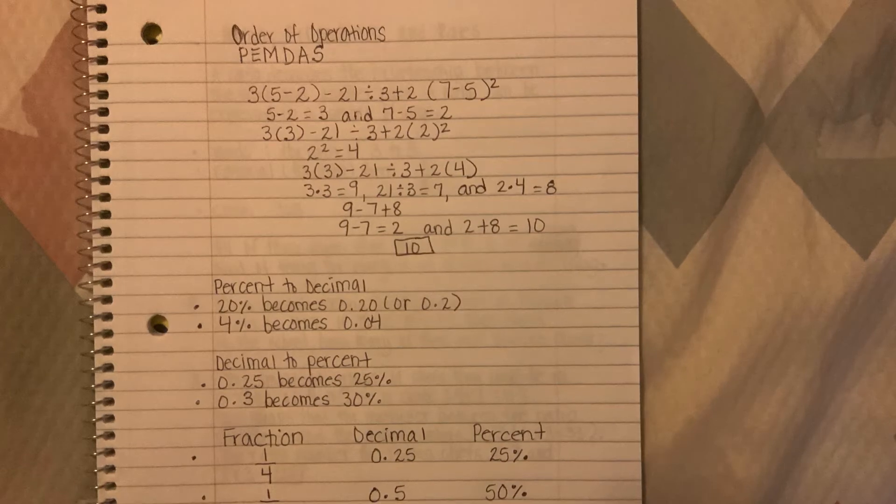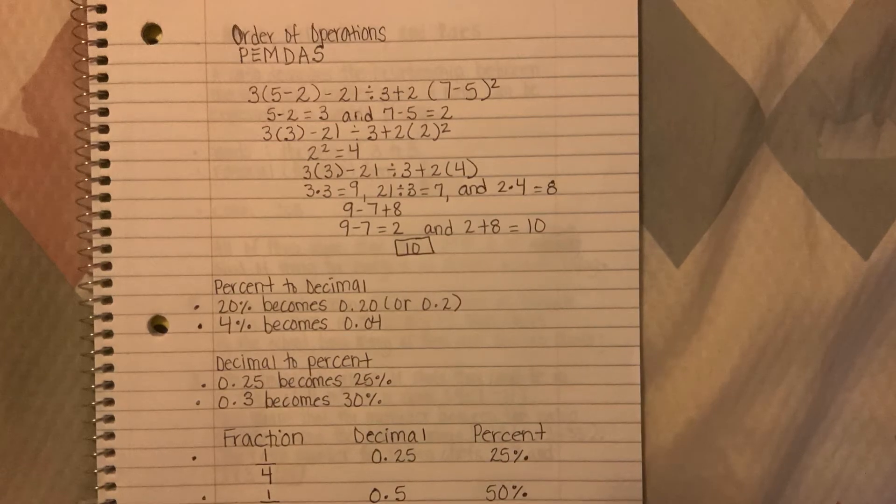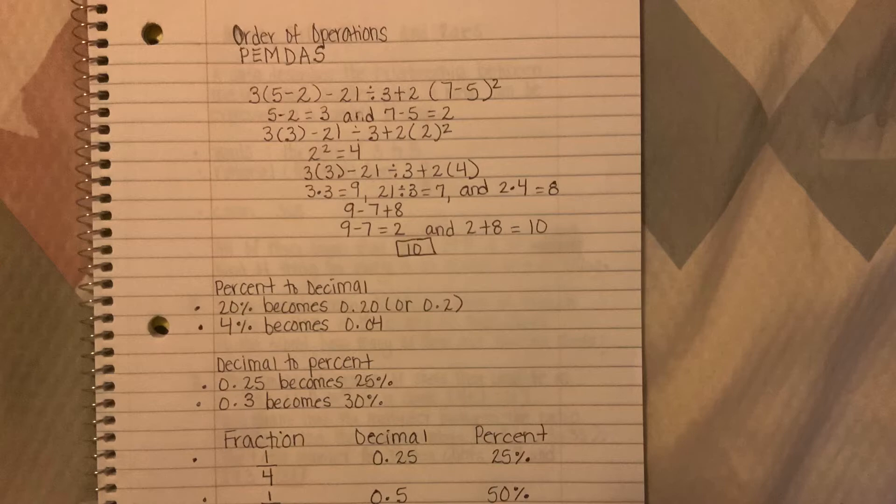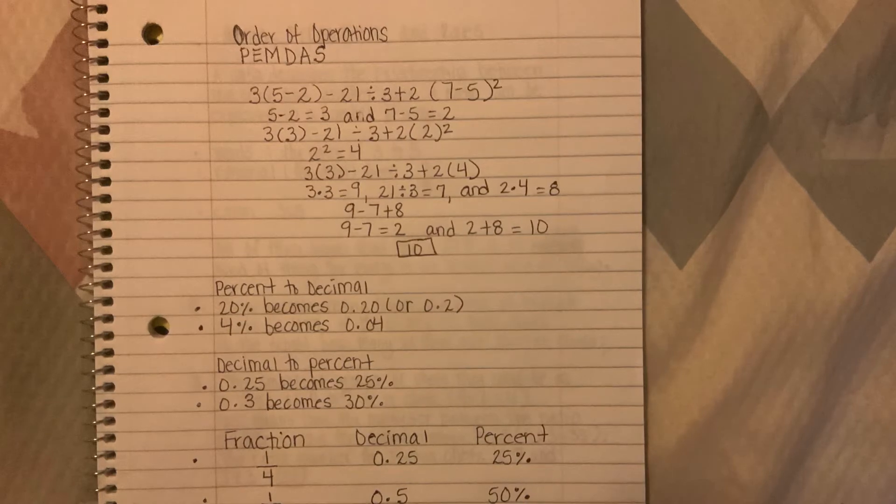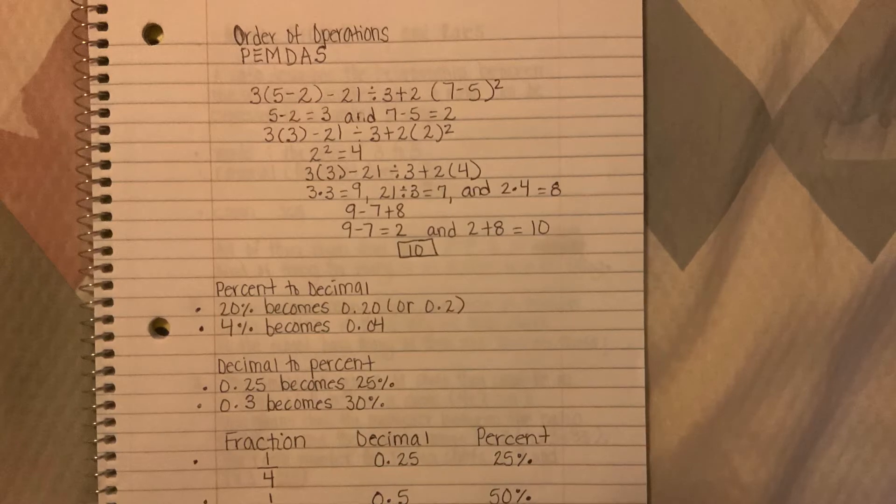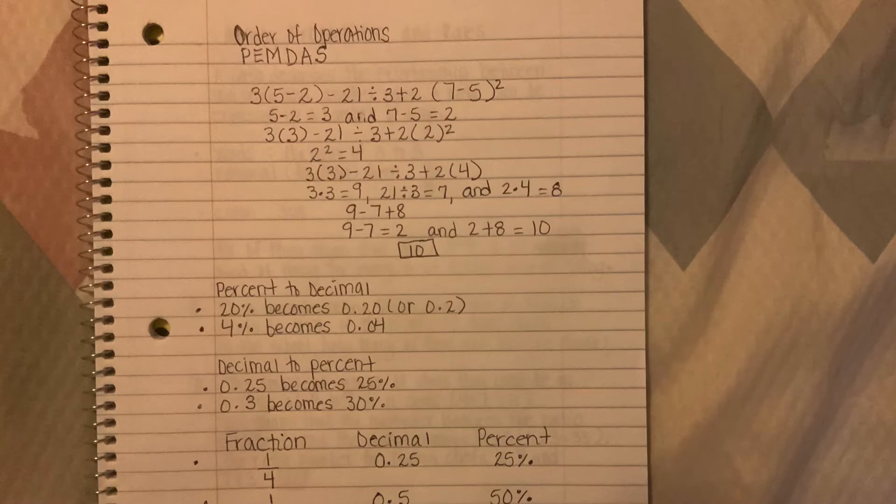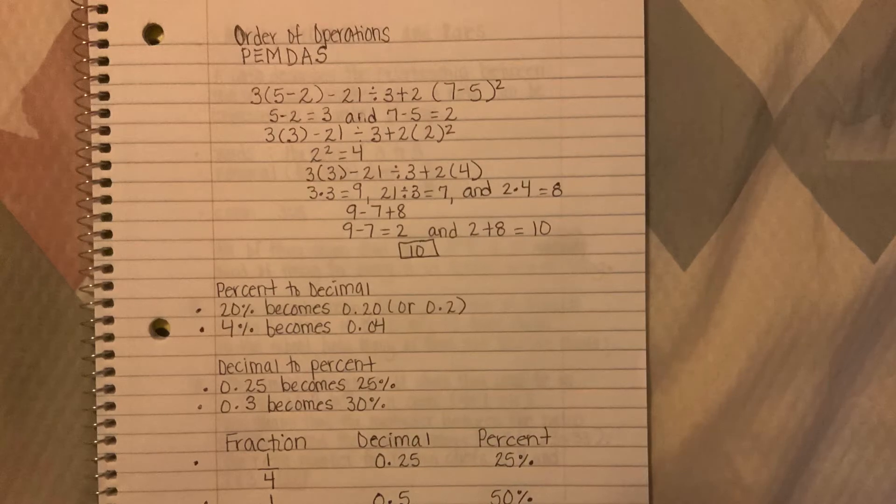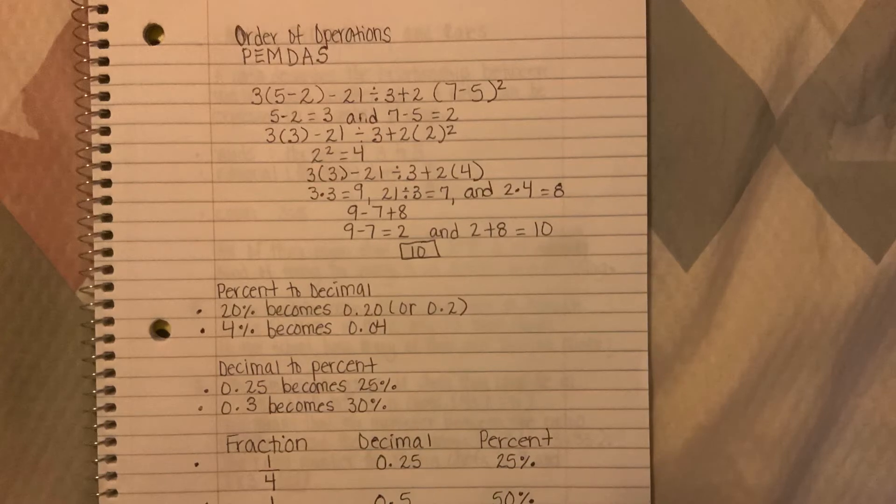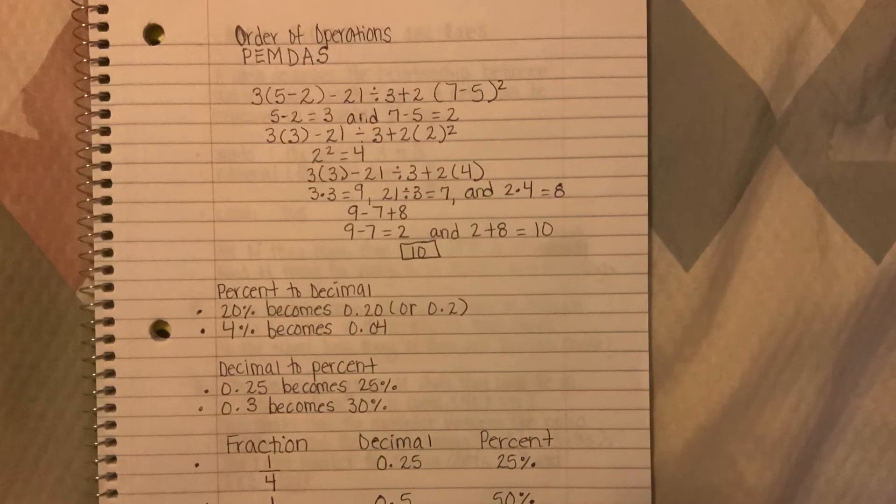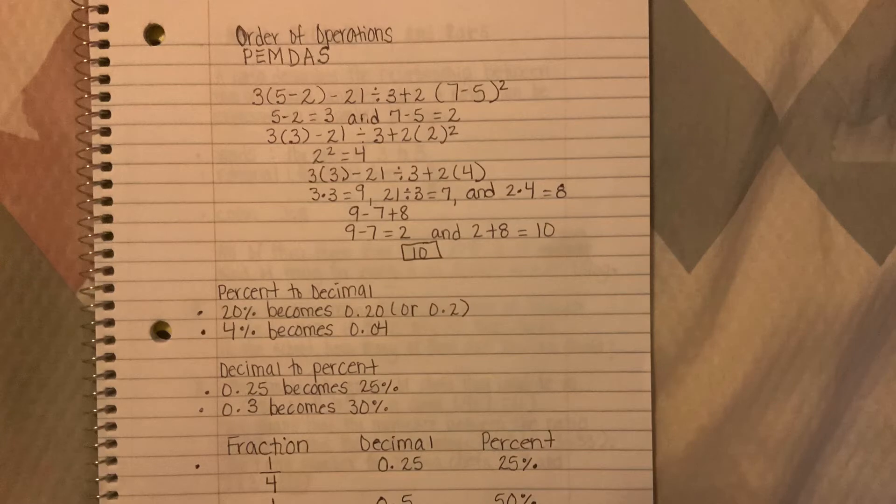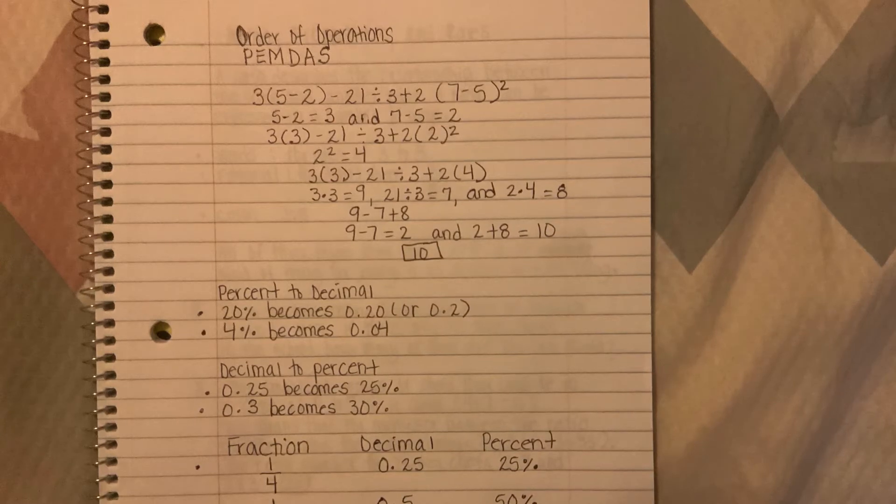We have two parentheses: 5 - 2 and 7 - 5. We always remember to solve everything from left to right, so we start with 5 - 2 equals 3, and 7 - 5 equals 2. Then let's continue, drop down the rest: 3 times 3 minus 21 divided by 3 plus 2(2) squared.